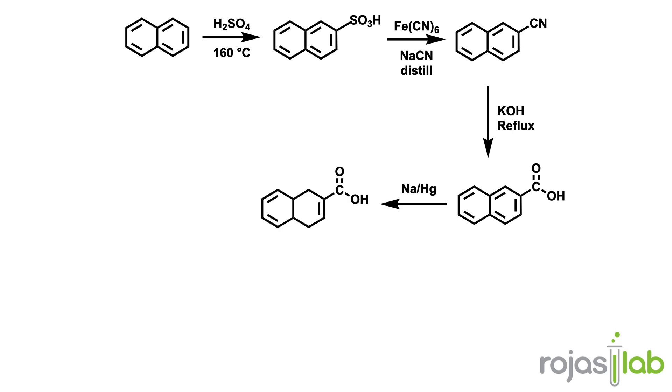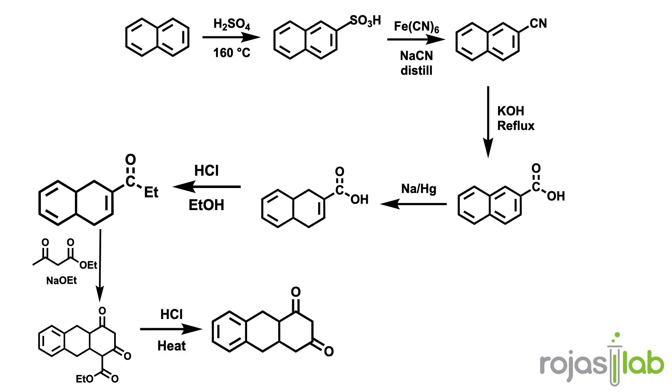Subsequently, we can do a Birch reduction in order to form our carboxylic acid with just a single pi bond in that second ring. Subsequently, doing a Fischer esterification gives us an ester, and then a Dieckmann cyclization gives us our third ring. The ester group can be removed by the addition of hydrochloric acid and heat. Finally, the anthraquinone can be deoxygenated by using zinc dust in a distillation apparatus.